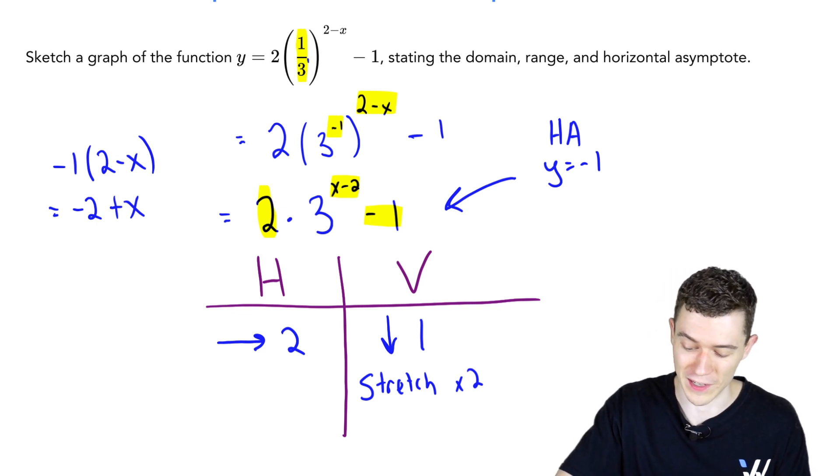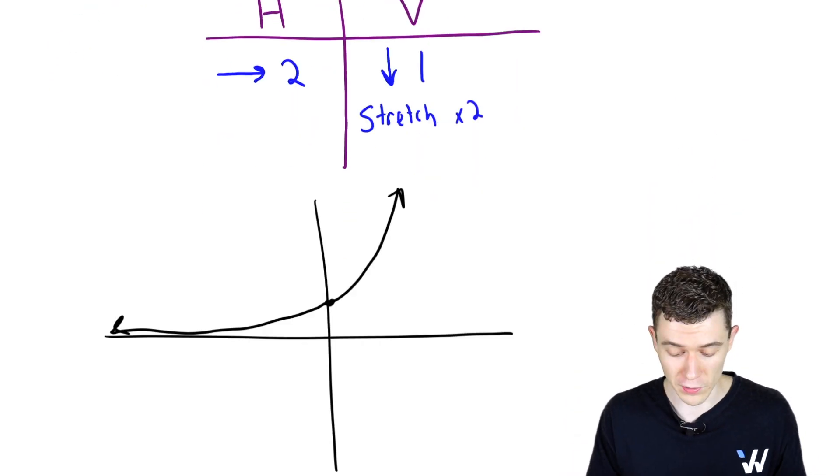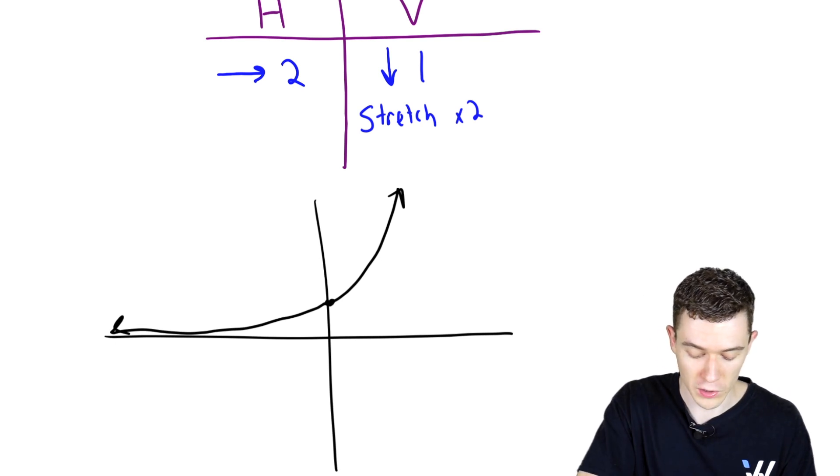Let's see if we can graph this here. Originally, three to the x looks like this, but we're moving it two to the right, down one. So we'll shift to this point zero one, two to the right and down one will put us right here.